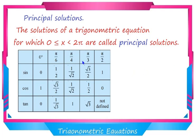To find the principal solutions, first you should know the values of trigonometry functions of standard angles, that is 0, π/6, π/4, π/3 and π/2, and sin, cos and tan functions. These values you already know, you just have to recall and remember them.